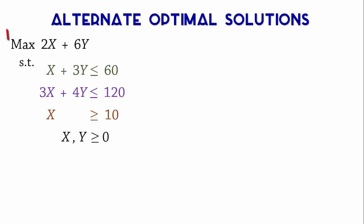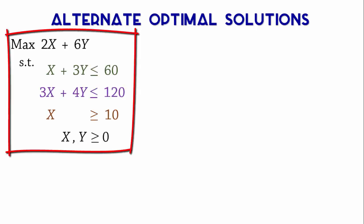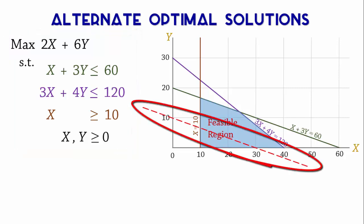Let's begin with alternate optimal solutions. Consider this linear programming problem and its graph. Here is an instance of the objective function line. Since this is a maximization problem,